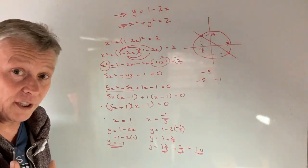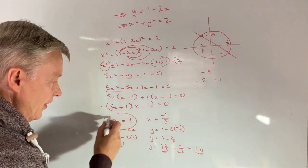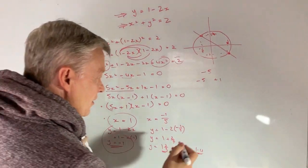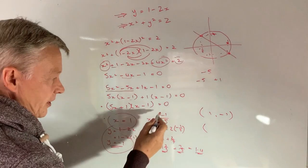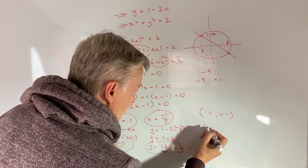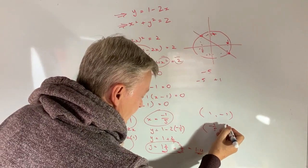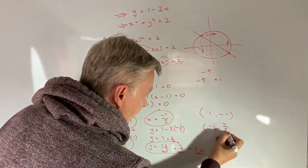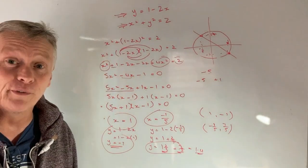So therefore, I've got my two coordinates. My first coordinate is this one and this one. So it's going to be 1 and minus 1. And then my second coordinate is going to be this one and this one, which is going to be minus 1 fifth and 7 over 5. Sorry about my awful writing. It hasn't really improved over the years.